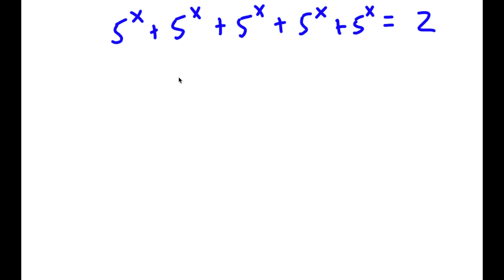Hey guys, welcome back to Click Academics. In today's video, I'm going to be teaching you guys how to solve this exponential problem. So we have phi to the power of x, plus phi to the power of x, plus phi to the power of x, plus phi to the power of x, plus phi to the power of x, is equal to 2.